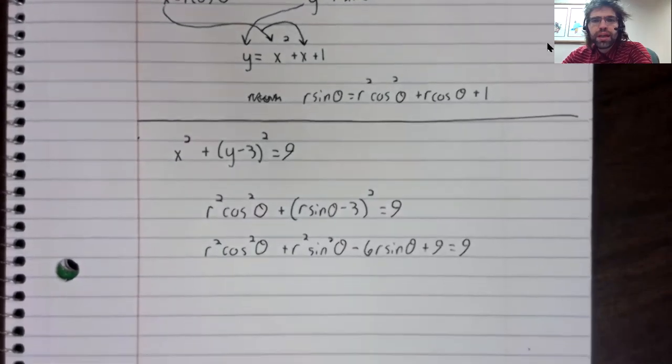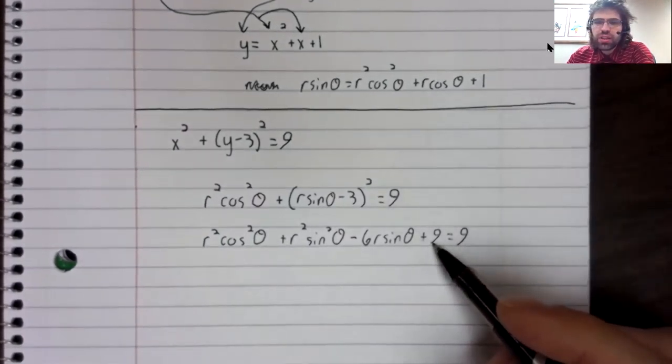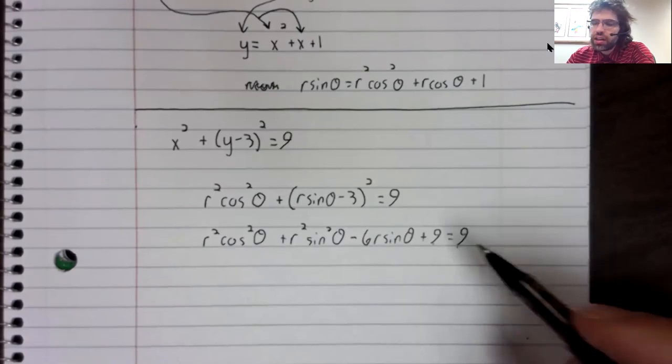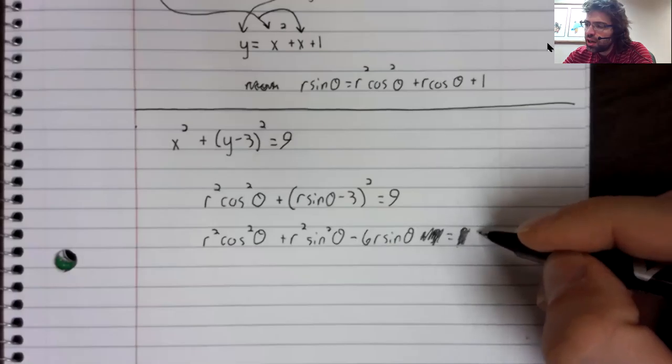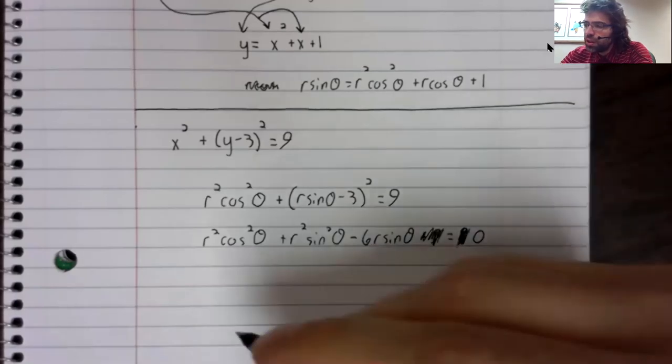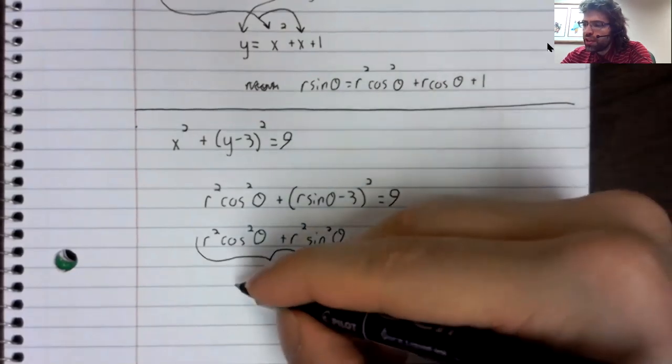Some cancellation occurs. You see this nine and this nine. We can subtract nine from both sides. And more significantly,